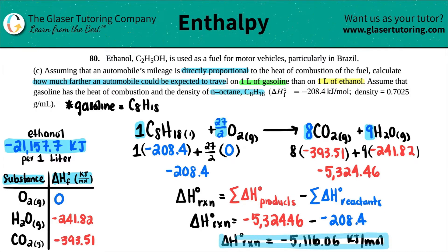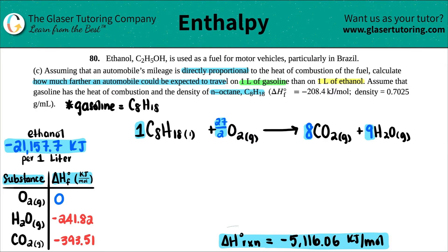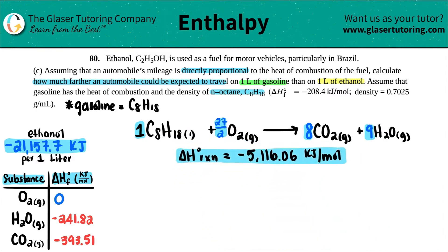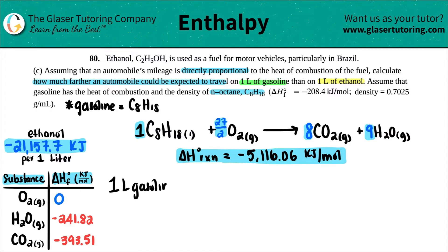That ΔH value is the only thing we need going forward — erasing the earlier work to make room. Now we need to find how much heat is produced from one liter of gasoline, C8H18. We know the heat per mole, but we want heat per liter, so we start with one liter of gasoline and use the given density.